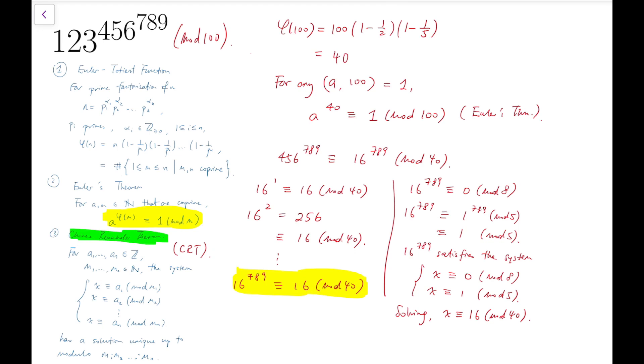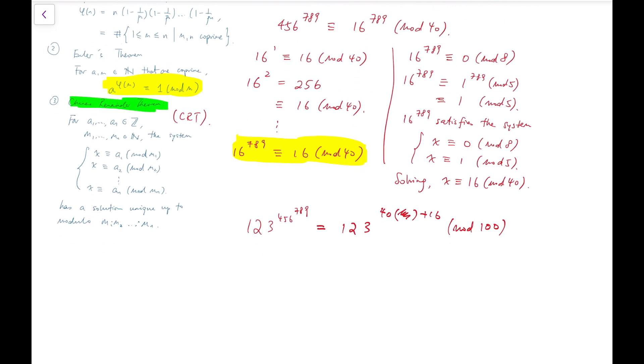So from this, we know that the original number is equal to 123 to the power (40 times some number plus 16) mod 100. So I can rewrite this as 123 to the power of 16 mod 100. And then further reduce that because the base is greater than 100, so I can divide it by 100 and just keep the remainder, which is 23 to the power 16 mod 100.